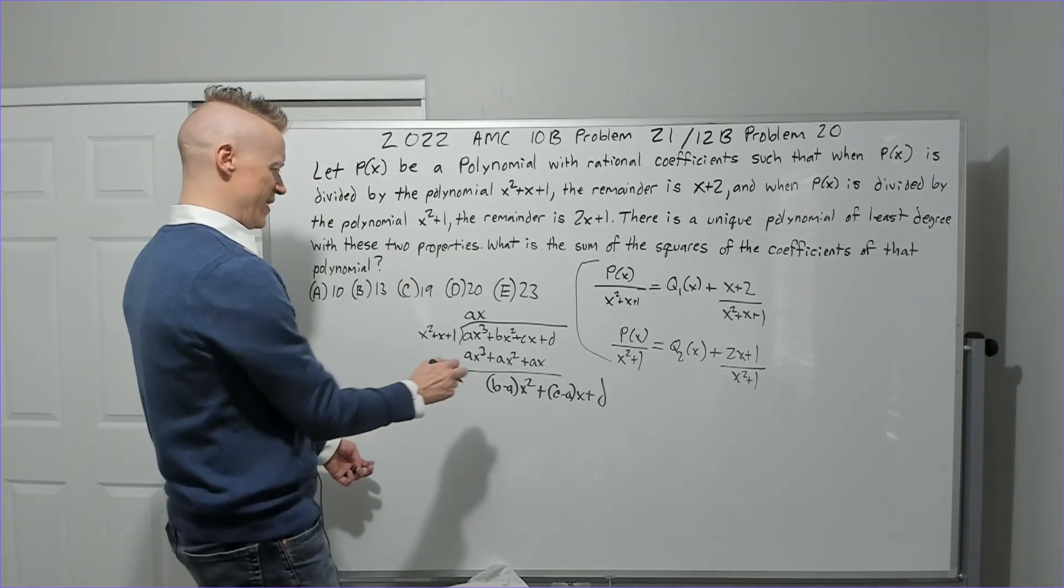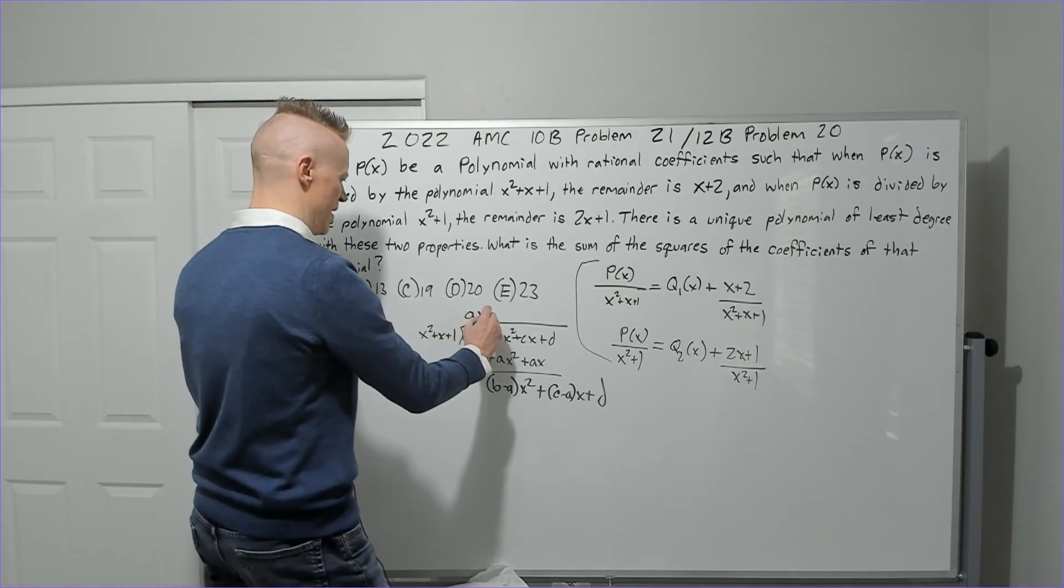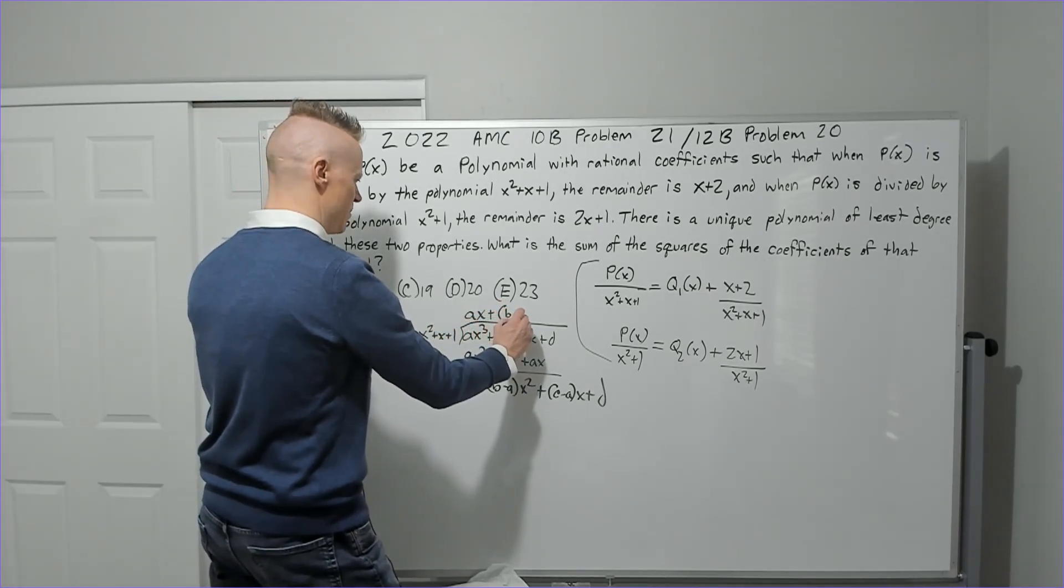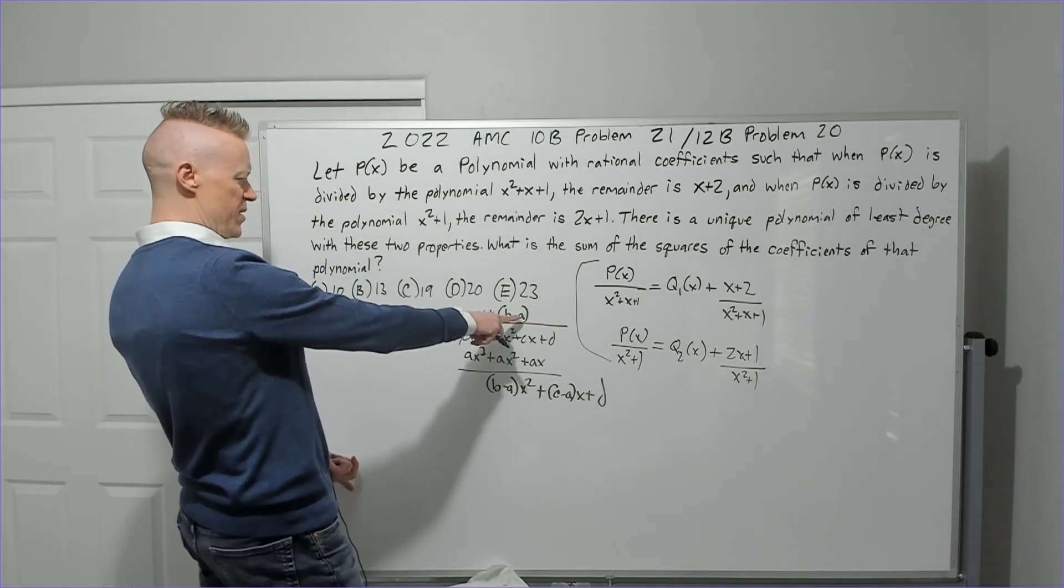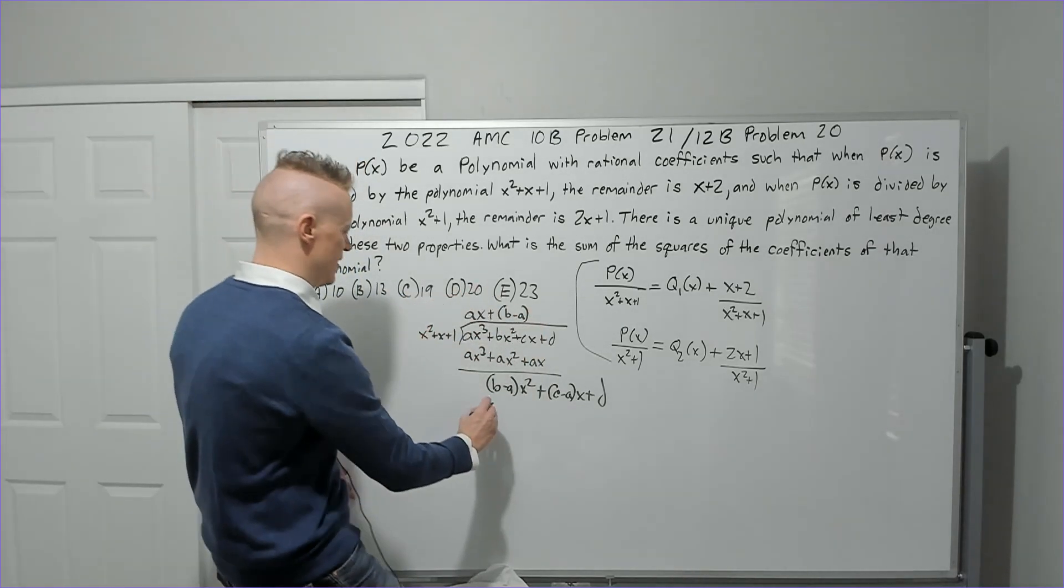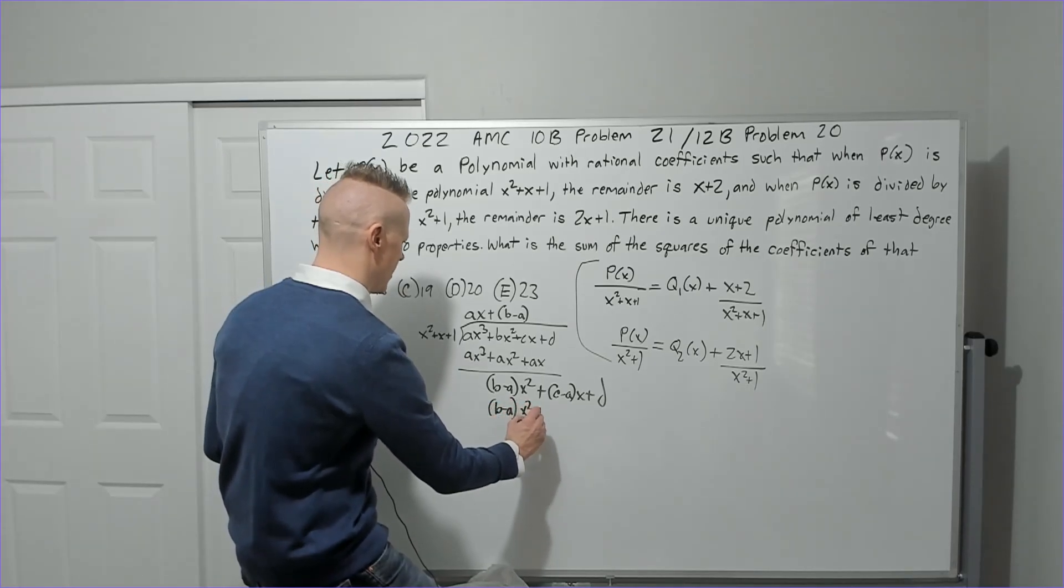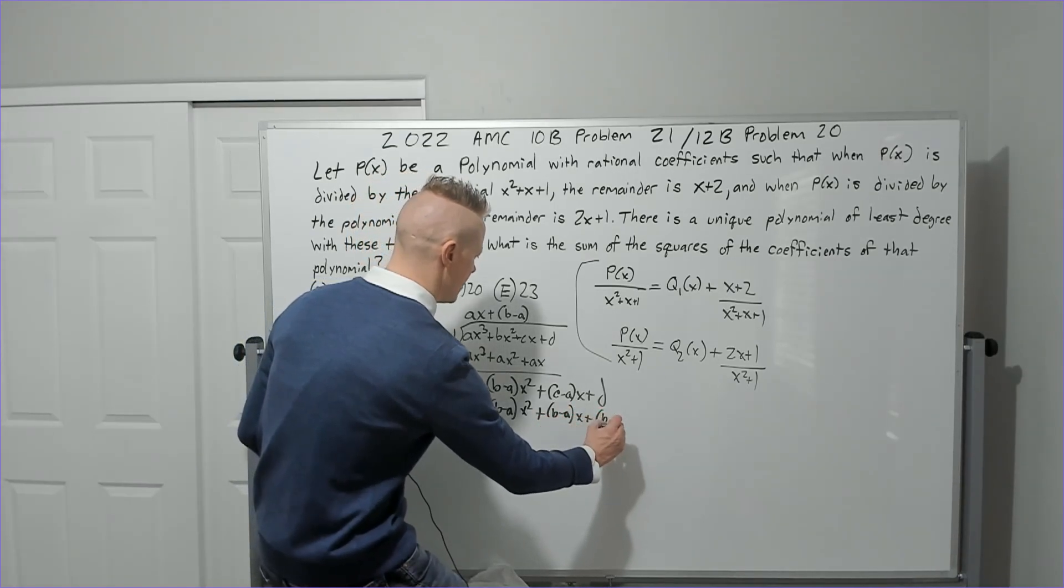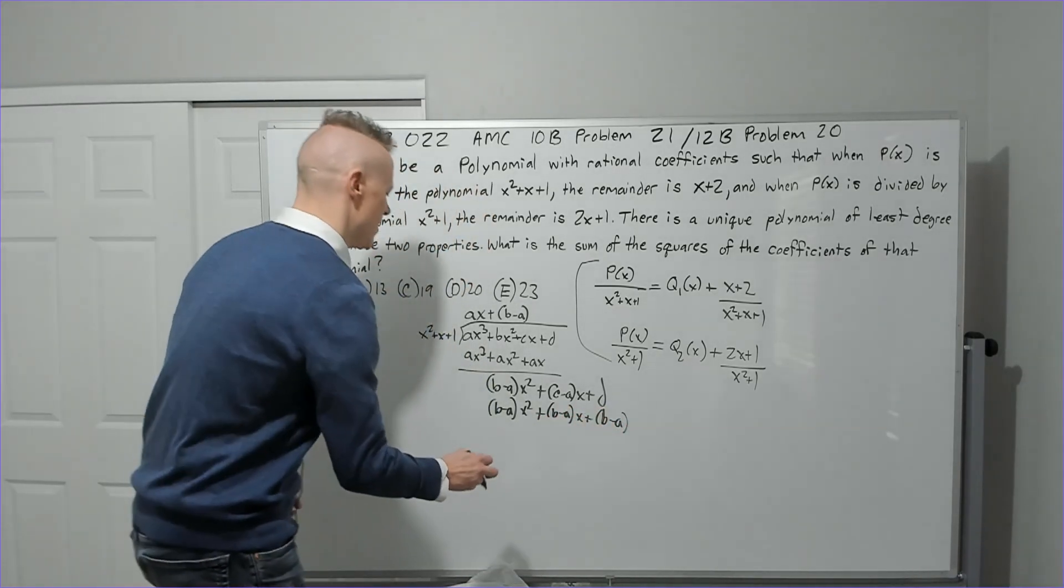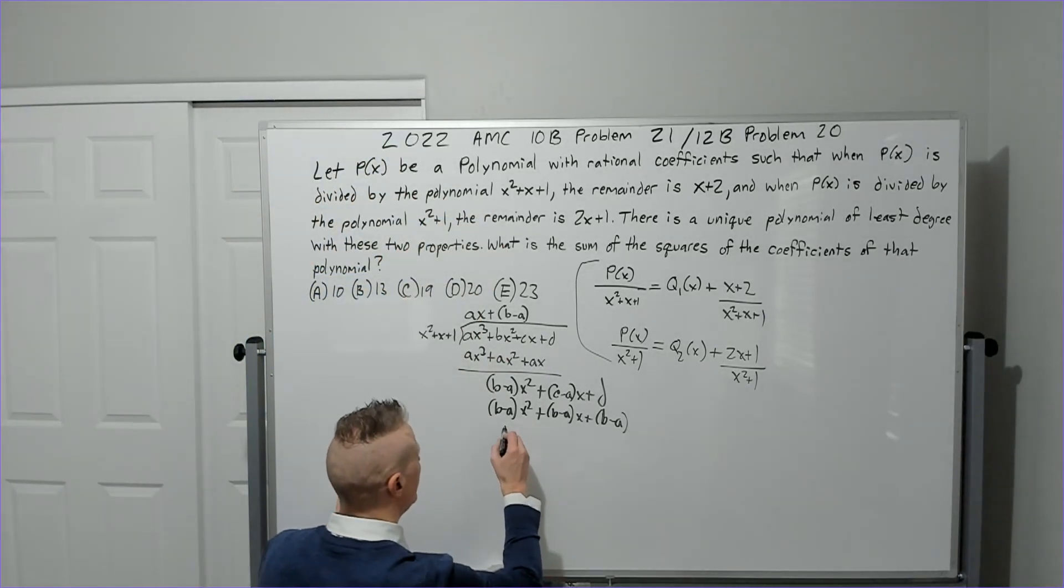So b minus ax squared plus c minus ax plus d. Okay, that is what we have now. We're going to do it one more time. We're going to multiply by b minus a, just b minus a. So I'm going to do (b minus a) times this to generate (b minus a)x squared plus (b minus a)x plus (b minus a). So now what? We will subtract.